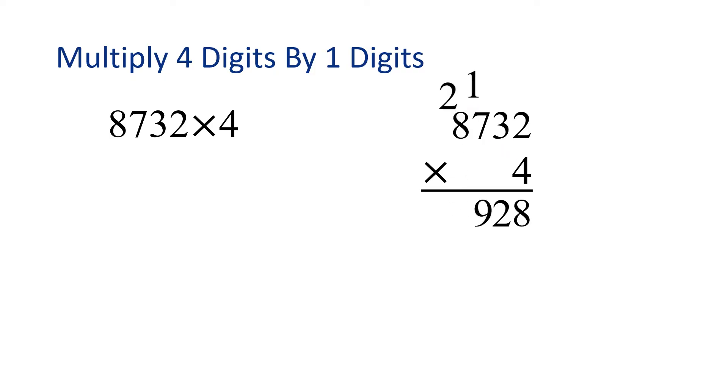Now multiply 4 times 8 and then add 2. 4 times 8 is 32 plus 2 gives us 34. The product of 8,732 and 4 is 34,928. Great job!